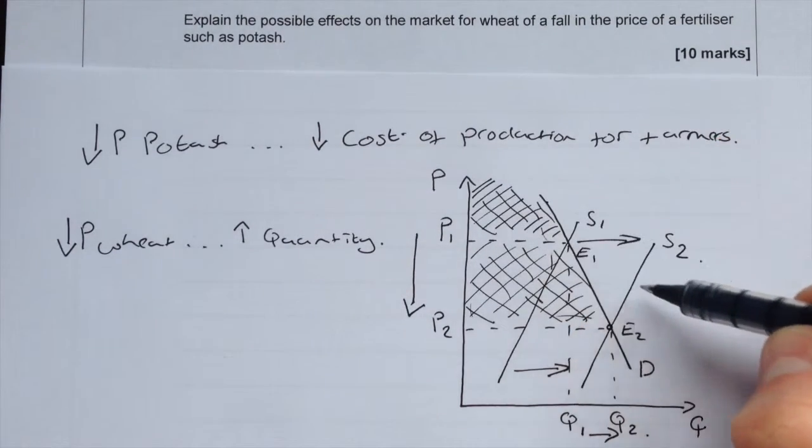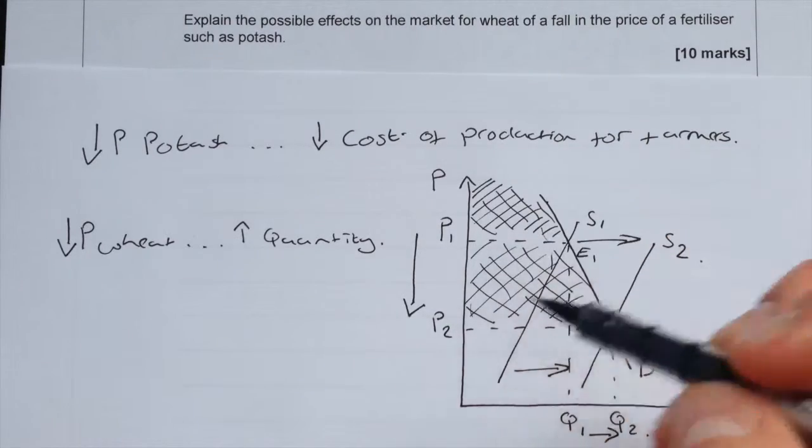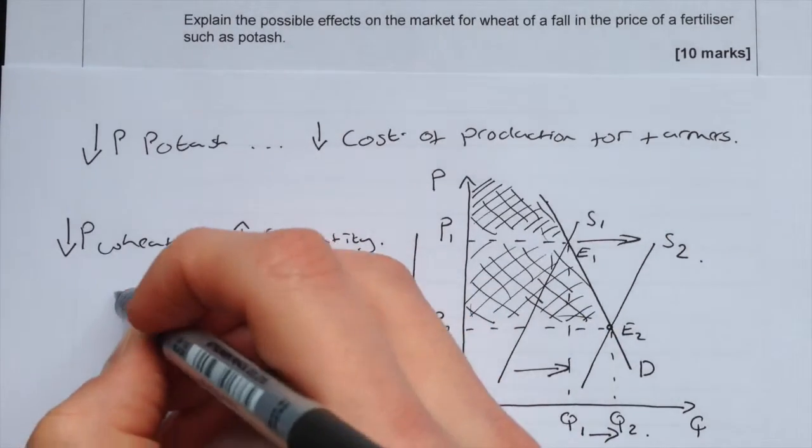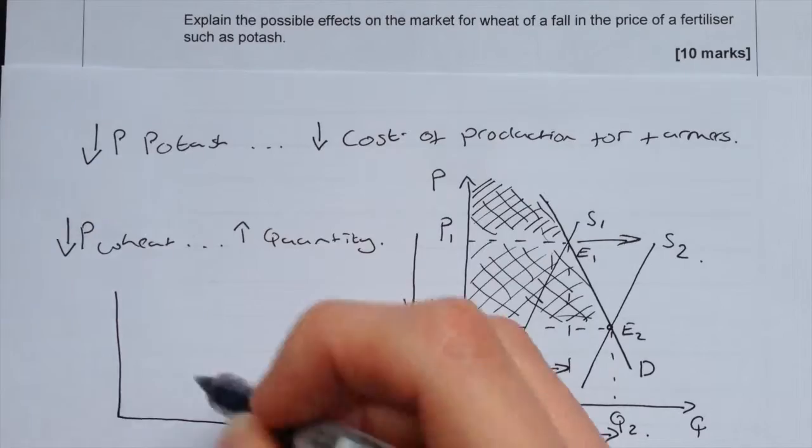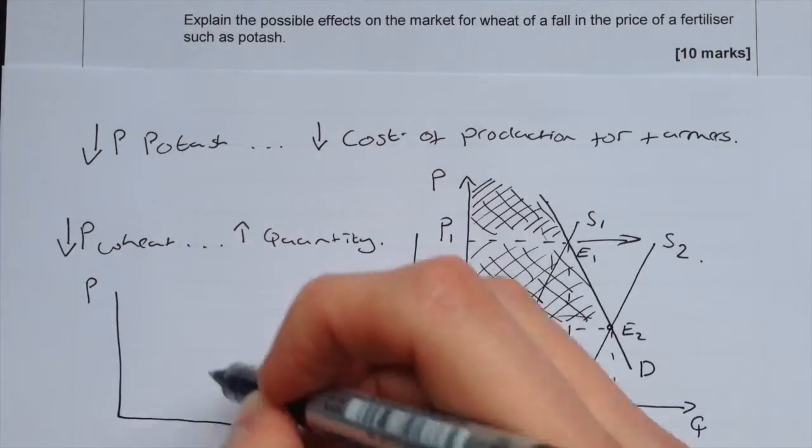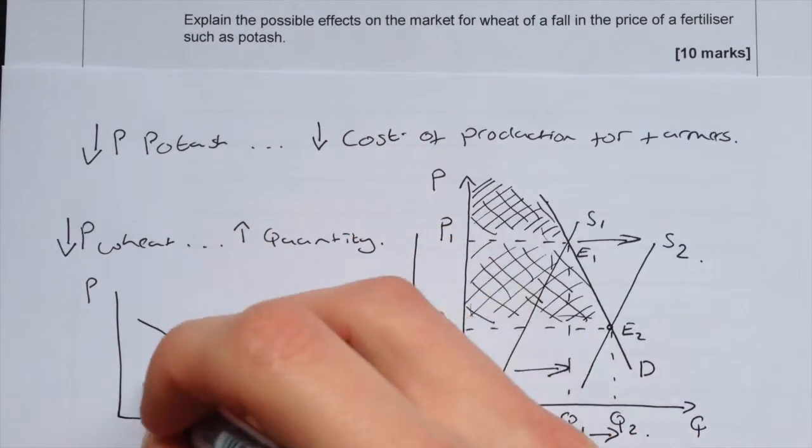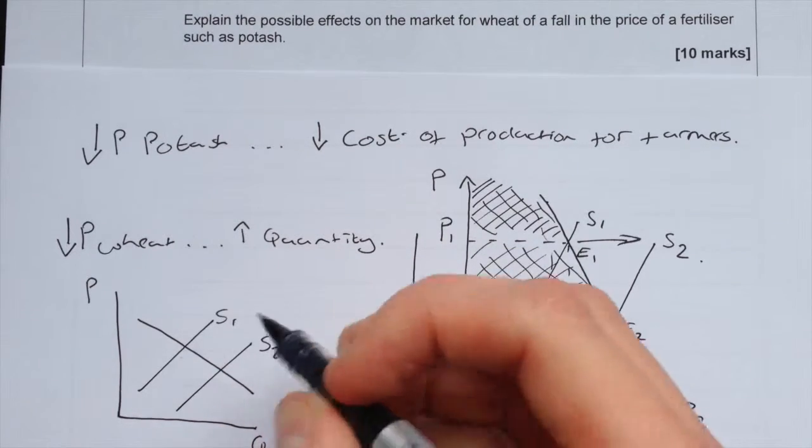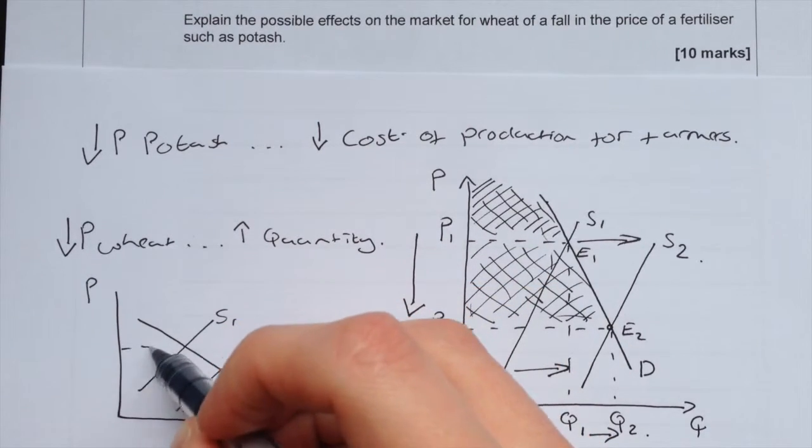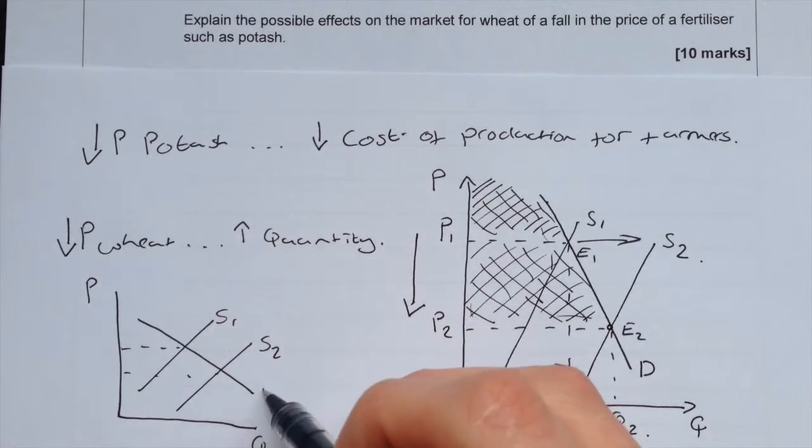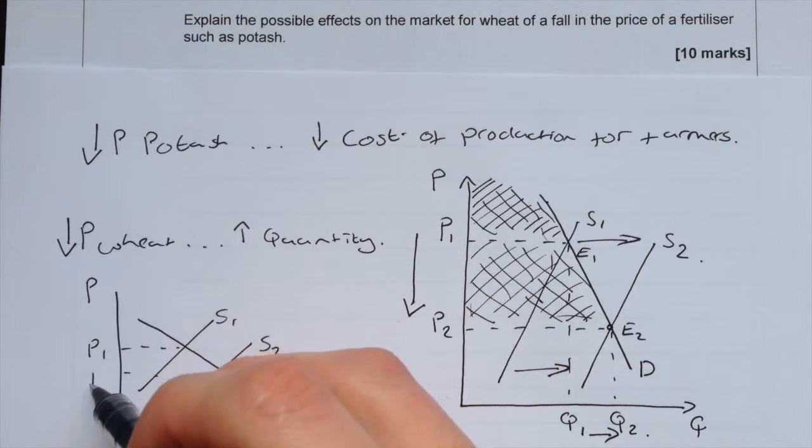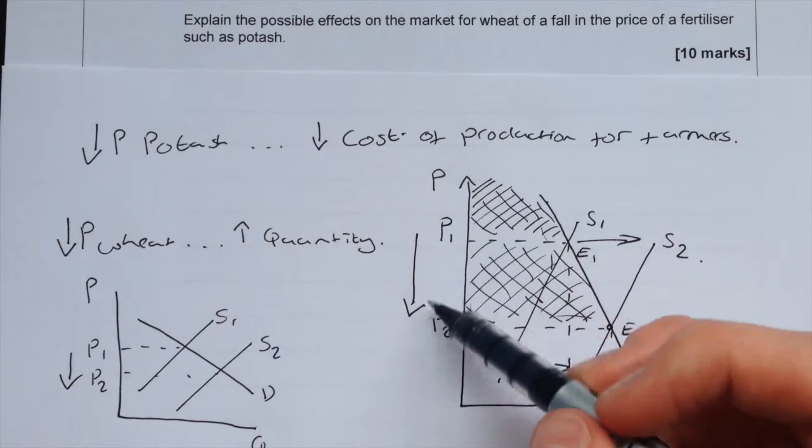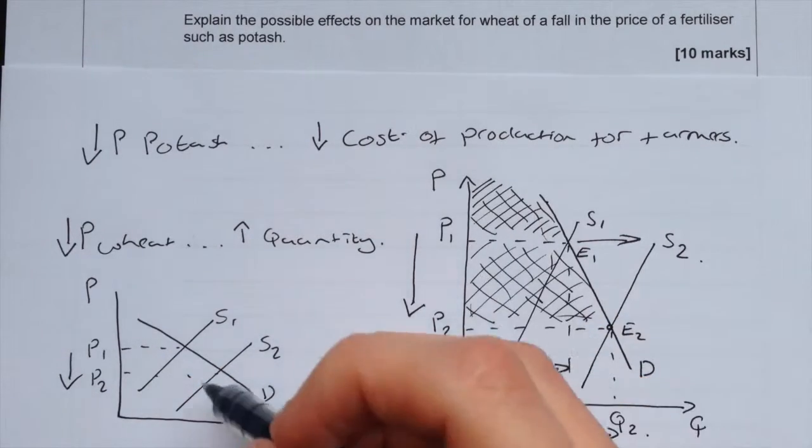Whereas if it was drawn more elastic, then the price decrease would not be as much. I'll just draw it quickly here. So we've got P, Q, S1, S2, and demand. P1, P2. This decrease in price is much less than this decrease in price, but there is a greater increase in quantity here.